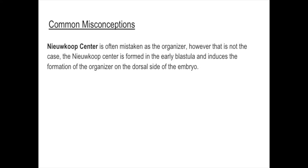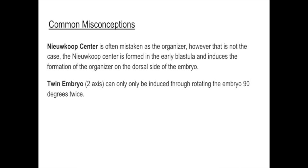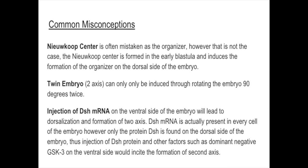The Nieuwkoop Center is often mistaken as the organizer, but that is not the case. The Nieuwkoop Center is formed in the early blastula and induces the formation of the organizer on the dorsal side of the embryo. Twin embryos can only be induced through rotating the embryo 90 degrees — that is incorrect. There are other methods such as injecting the ventral side of the embryo with certain mRNAs or proteins. A third misconception is that injection of disheveled mRNA on the ventral side will lead to dorsalization and formation of two axes. Disheveled mRNA is actually present in every cell, but only the protein disheveled is found on the dorsal side. Injection of disheveled protein and dominant negative GSK3 on the ventral side would induce a second axis, whereas injection of disheveled mRNA alone yields no difference.